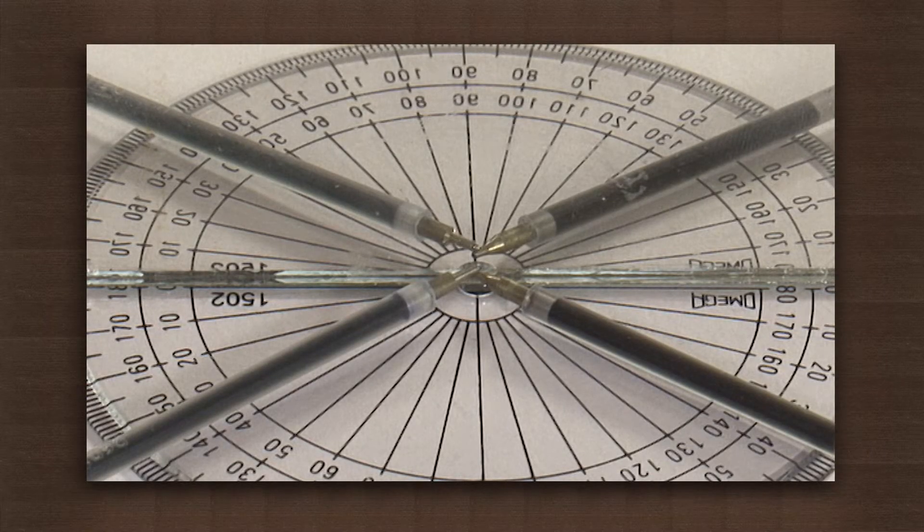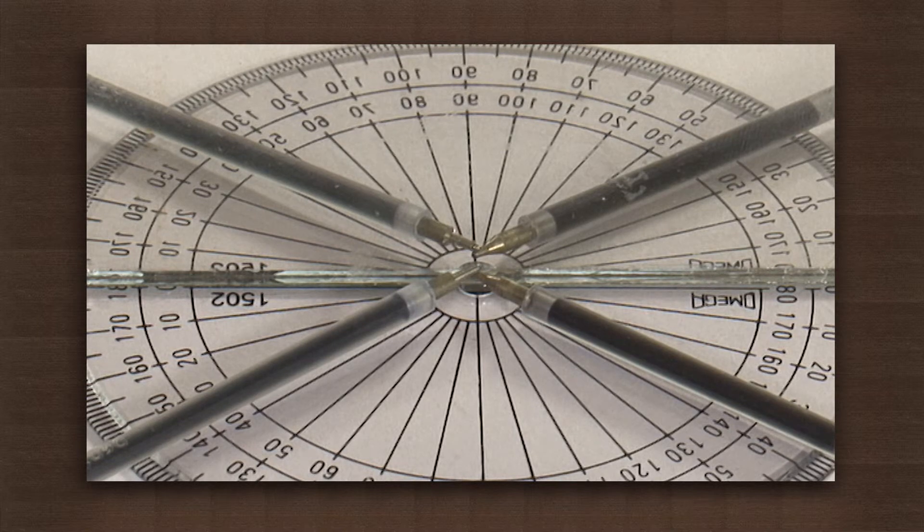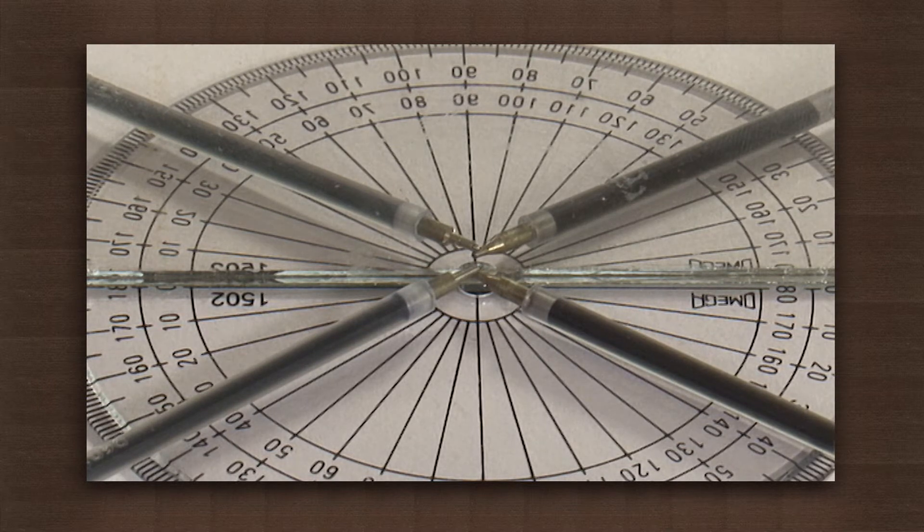We notice that the angle of incidence is equal to the angle of reflection, which in the above experiment was 50 degrees. Also, the incident ray, normal, and the reflected ray are all on the same plane, which is the plane of the paper.